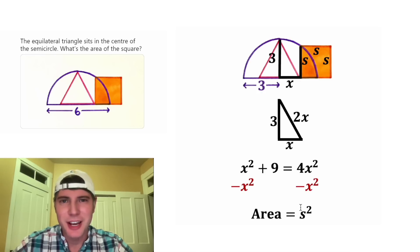Let's subtract X squared from both sides. On the left-hand side, these will cancel each other out. And on the right-hand side, 4X squared minus X squared is 3X squared.